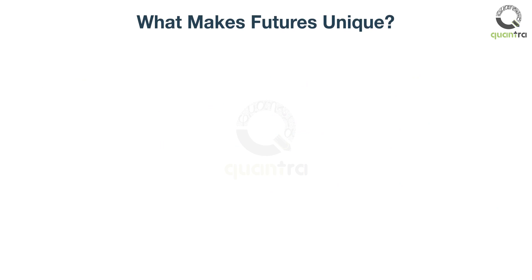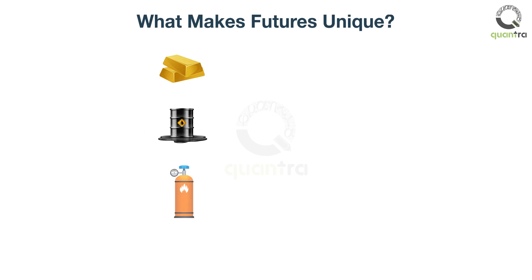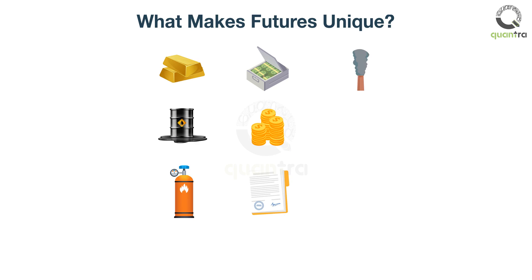The original agricultural commodities can still be traded, but we can now also trade everything from gold, oil and natural gas, to equity index futures, currency futures, bond futures, and even more esoteric assets such as emissions, bitcoin, and water.